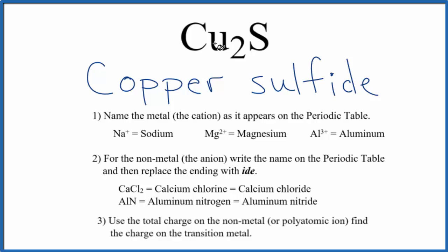Next, since copper is a transition metal, we don't know the charge on copper. We have to look at what it's bonded to to figure out its charge. Here, it's bonded to the sulfur. Sulfur is 2 minus, that's its ionic charge.